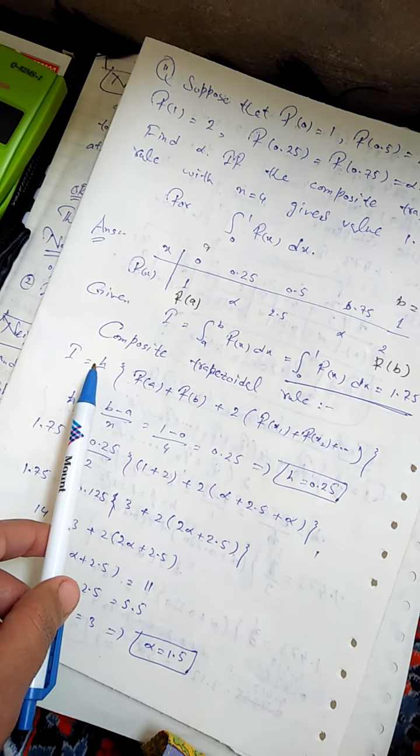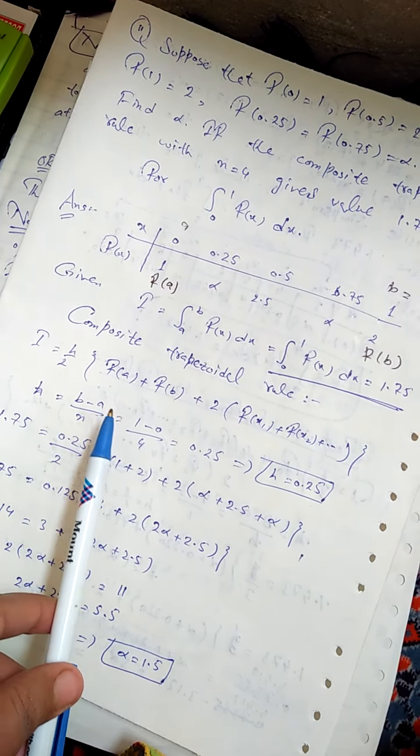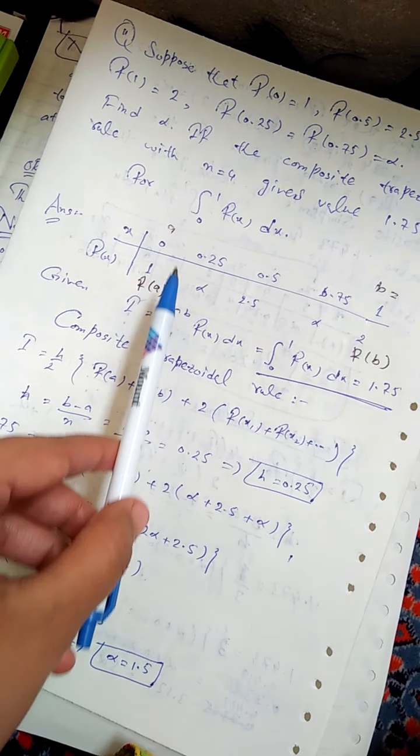Now one other thing: here is H. How is H? B minus A over N.